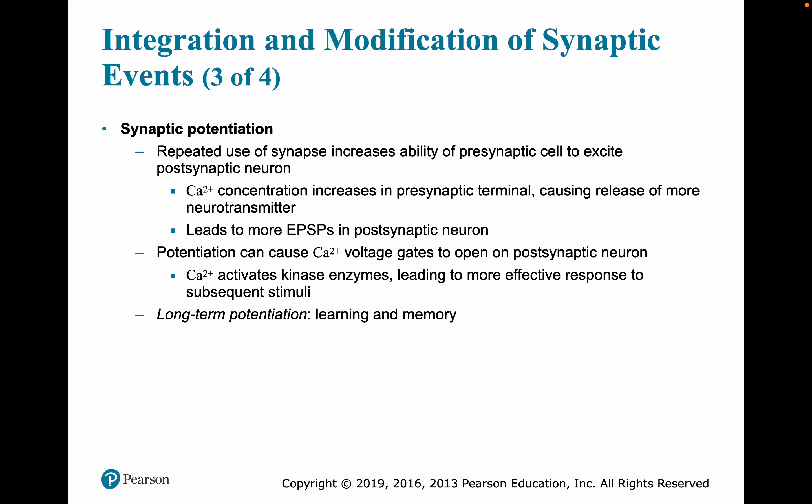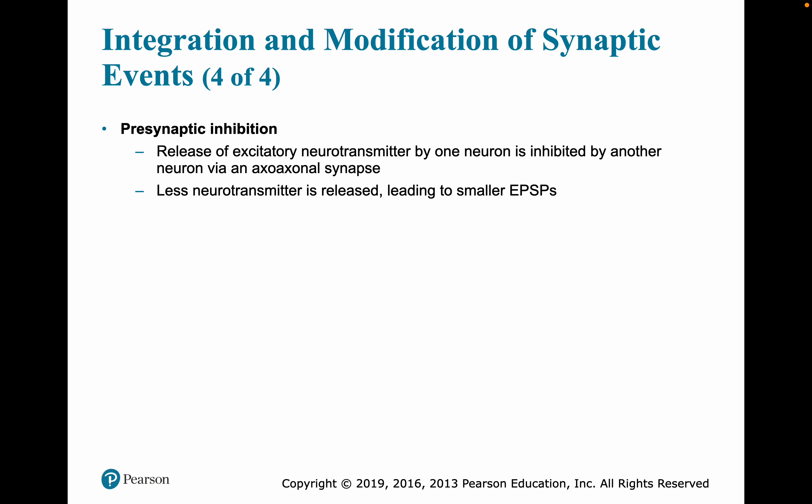The repeated use of synapses also makes the presynaptic cell excite the postsynaptic neuron more effectively. Calcium concentrations increase in the presynaptic terminal, causing release of more neurotransmitter, leading to more excitatory signaling. This is what we refer to as long-term potentiation, which is involved in learning and memory. The more you use these neurons and neural pathways, the quicker and faster they respond. We can also have inhibition, resulting in less neurotransmitter being released and smaller excitatory responses.